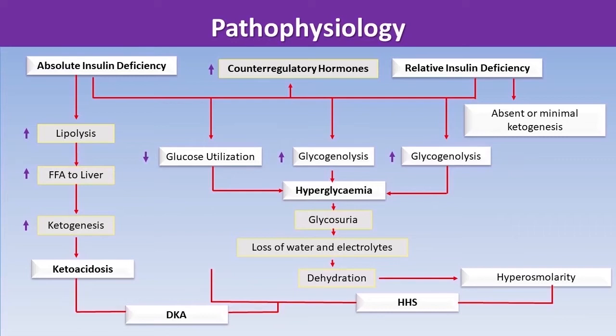What separates HHS from DKA is that the hyperglycemic state is more marked in HHS, which causes more marked dehydration and an increase in serum osmolarity — the hallmark features of HHS. DKA subjects also suffer dehydration, but because it is more marked in HHS, fluid resuscitation will be more liberal in HHS. The unique pathophysiological process of DKA involves increased serum ketone bodies, ultimately causing DKA. In clinical practice, some subjects may have mixed DKA and HHS features.